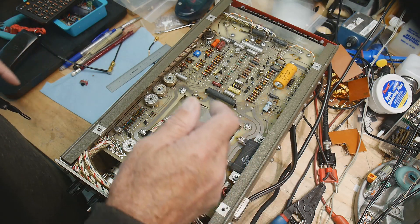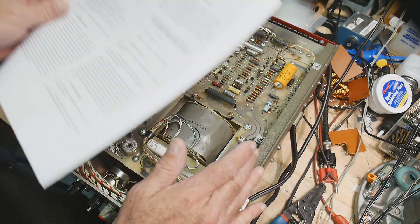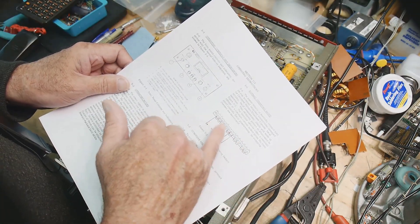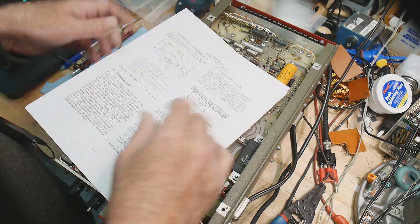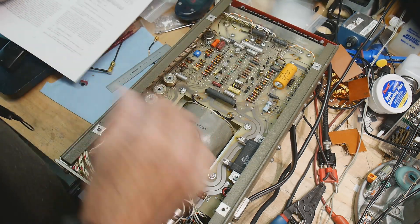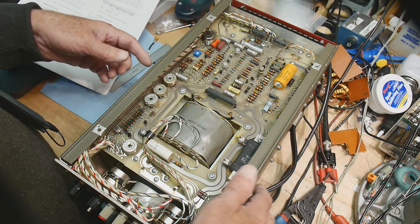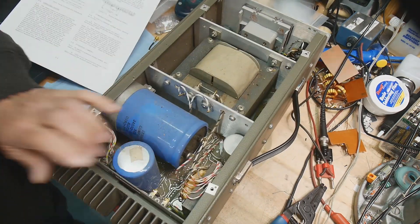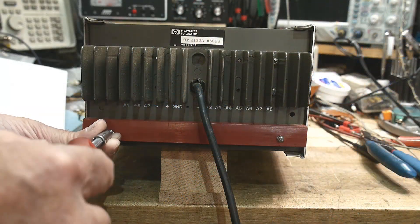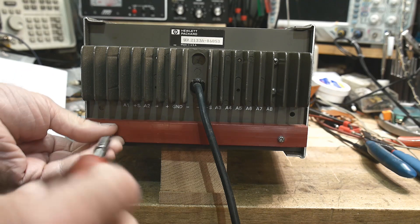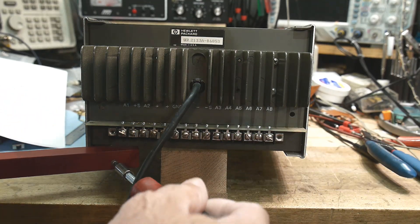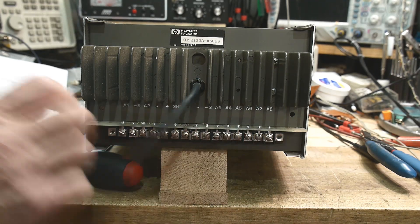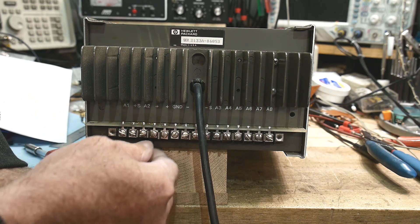Let's take a look at the back. Make sure it's strapped right. A lot of times these things come out of racks and they have remote sensing. You're able to bring the sense leads on separate wires out to the device and take into account any cable losses. It's kind of like a Kelvin contact. We need to make sure it's strapped right for our use.